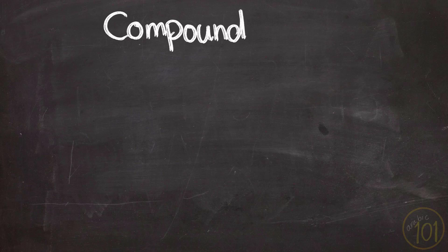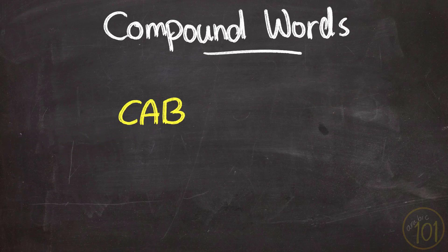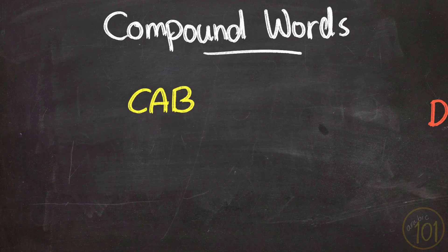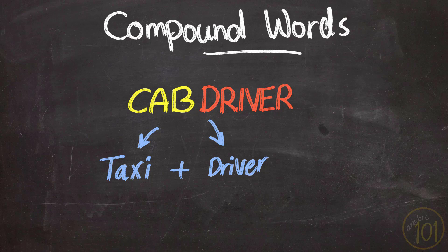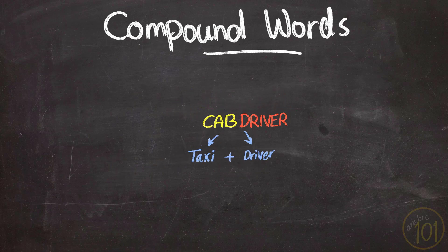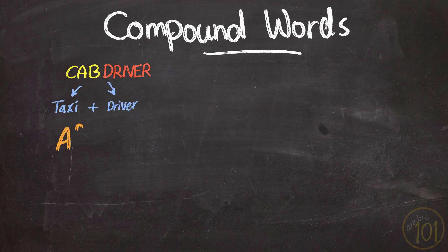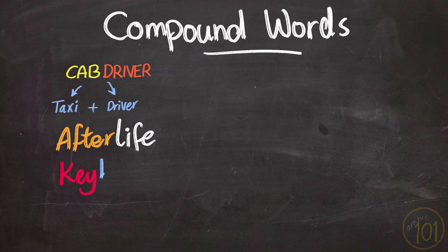Compound words are words that are made up by combining two words together. Sometimes the meaning can easily be guessed by checking the meaning of the components of the compound word — like, for example, afterlife, keyboard, airport, and so on.